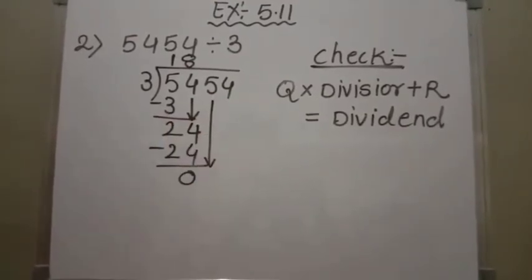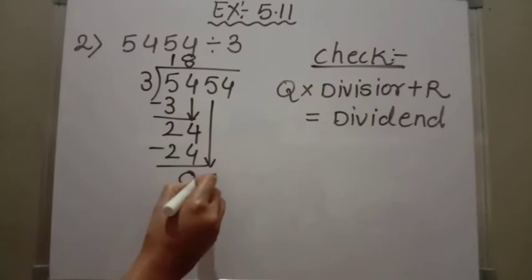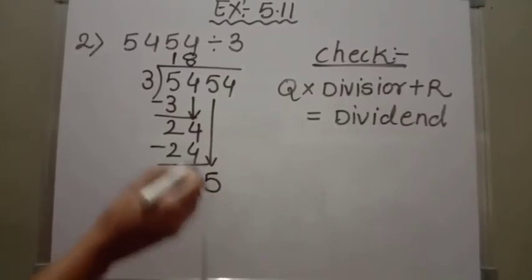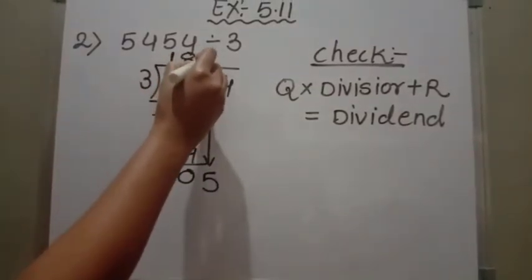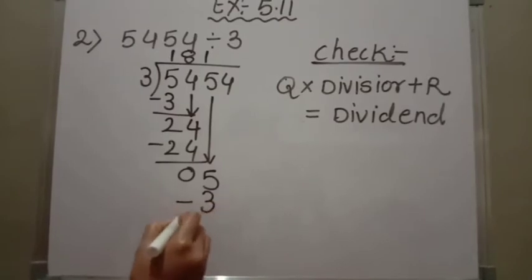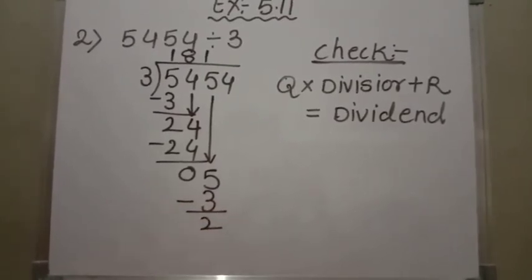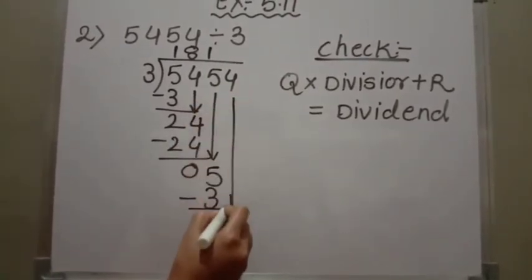Then the digit after 4, which is 5, will come down. Now we divide 5 by 3. Again, 3 ones are 3. 5 minus 3 equals 2. Then the last digit, 4, will come down.